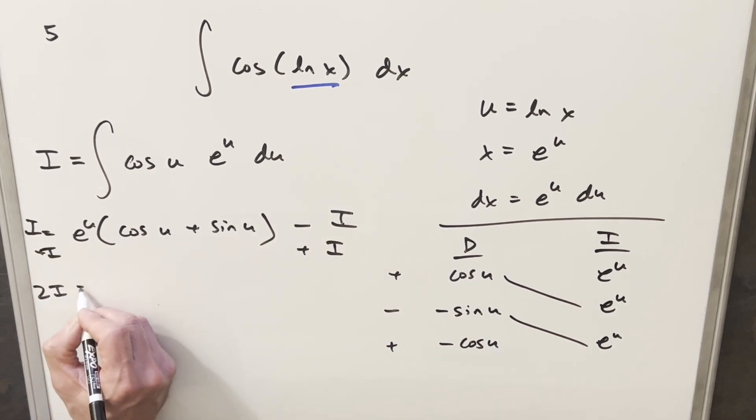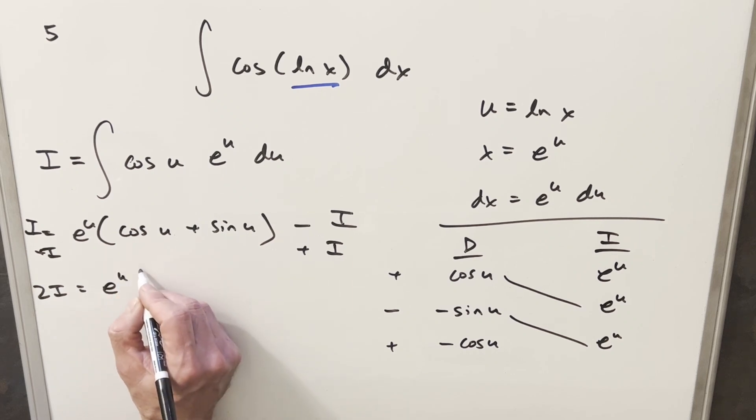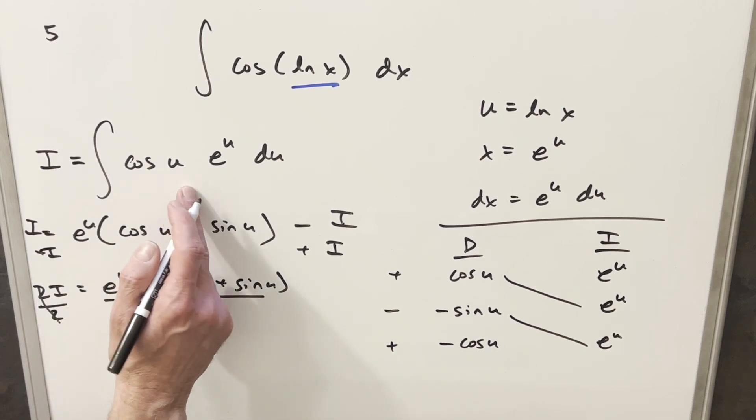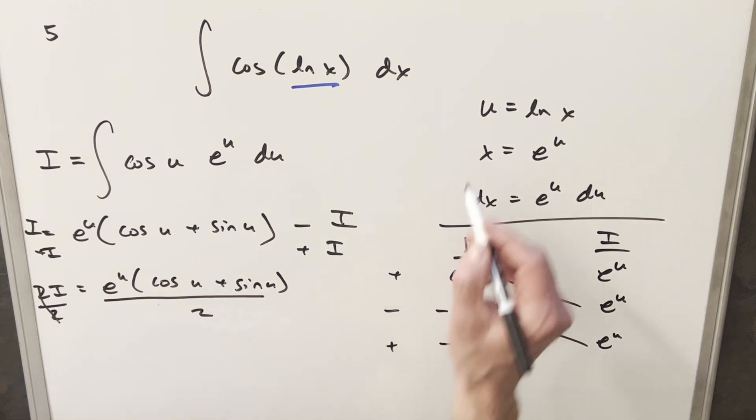Then on the left side, we have 2I, and then we'll just copy down all this business here. But then what I can do is just divide by 2 on both sides. So now we just have our solution, actually, in u. So all we need to do to finish this is just back substitute.